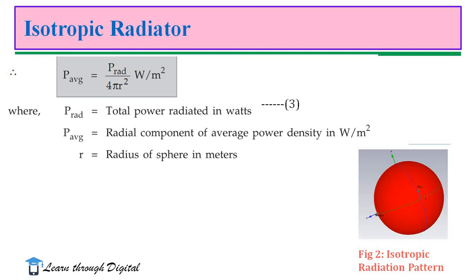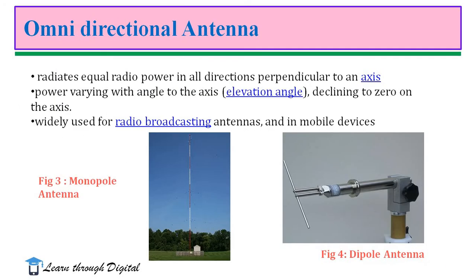Where P-rad is the total power radiated in watts, P-average is the radial component of average power density in watts per meter square, and r is the radius of the sphere in meters. This figure illustrates the isotropic radiation pattern, which is a spherical radiation pattern.